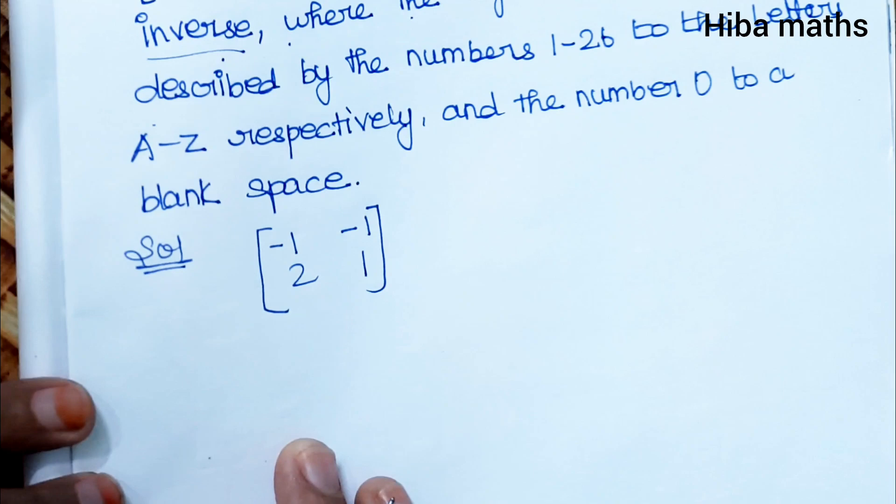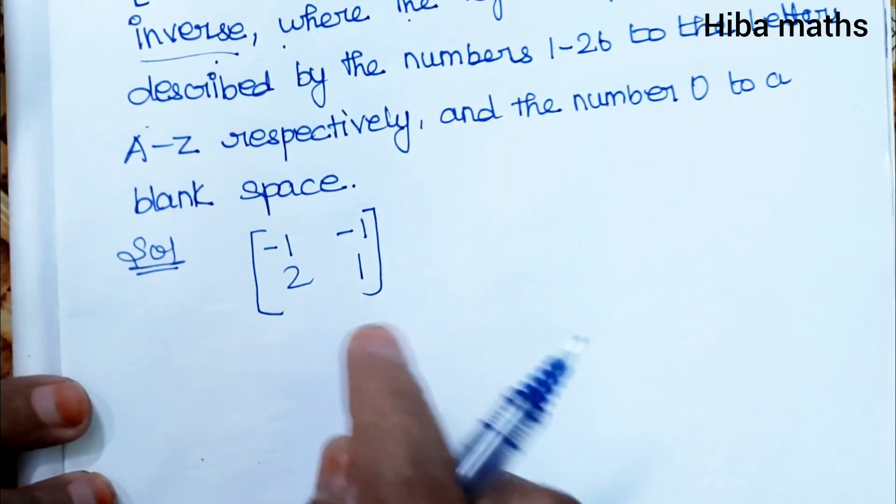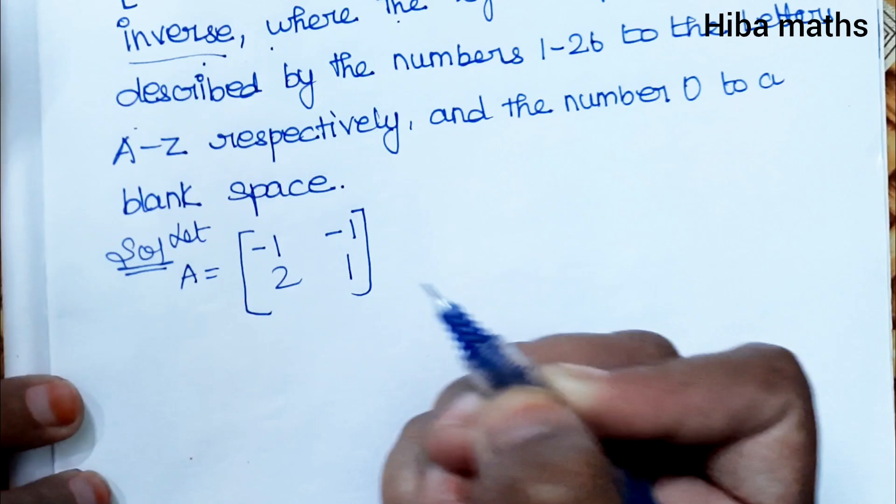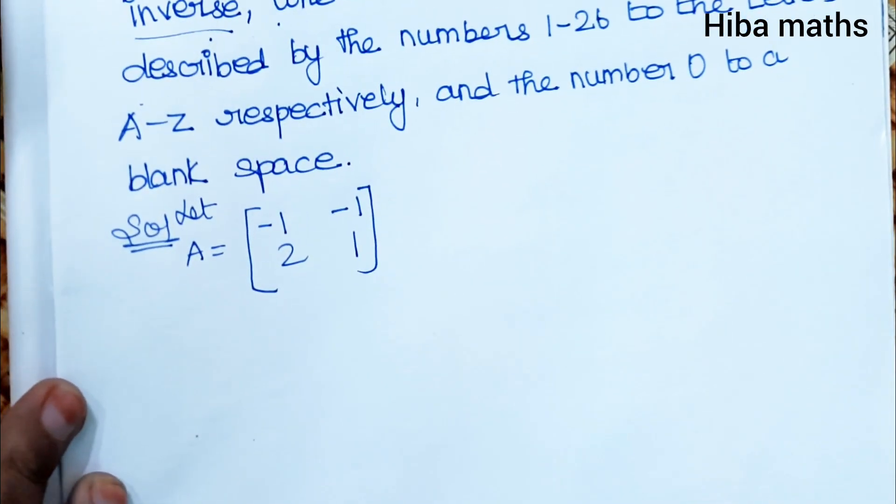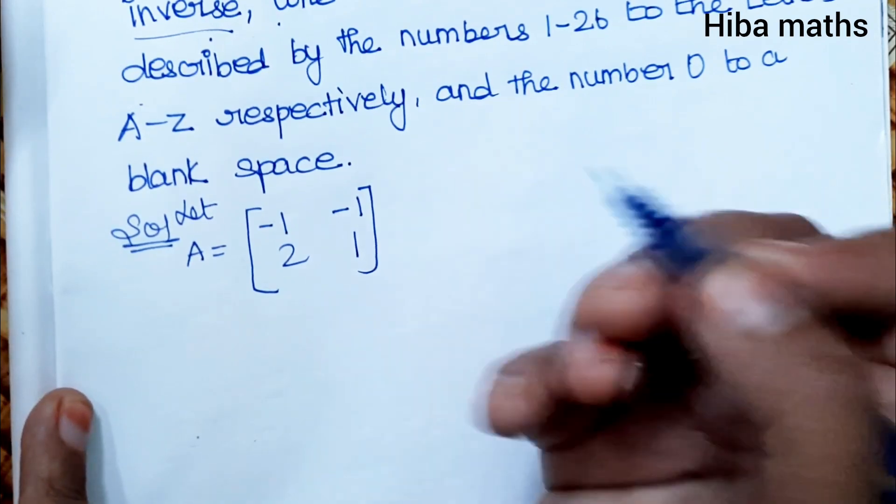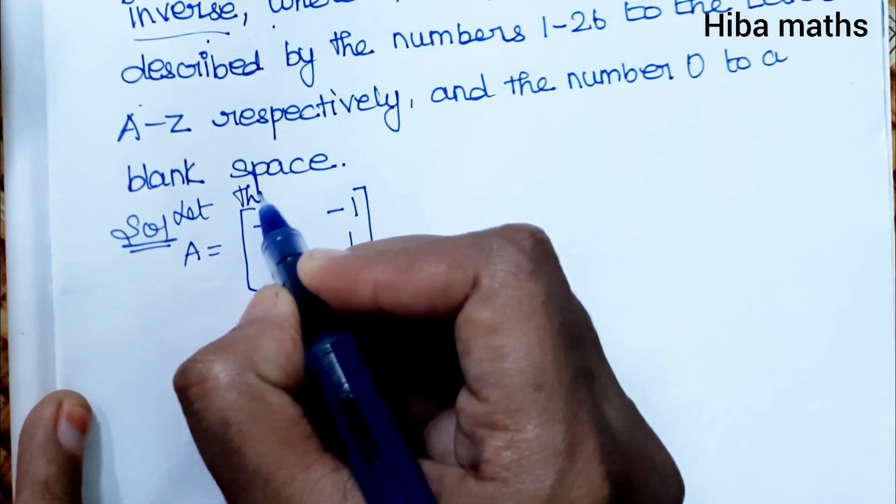Let the encryption matrix be A. So A equals [-1, -1; 2, 1].